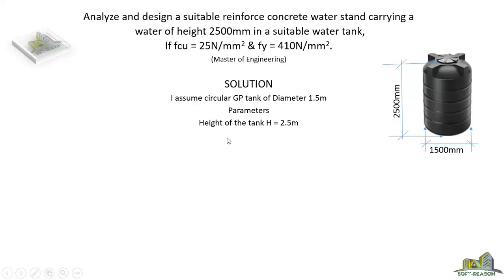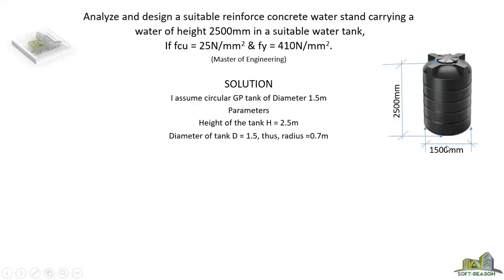The parameters in the question are as follows: the height of the tank H equals 2.5 meters, the diameter of the tank D equals 1.5 meters, and the radius — which is half of 1500 — equals 0.75 meters, noted here as approximately 0.7 meters.